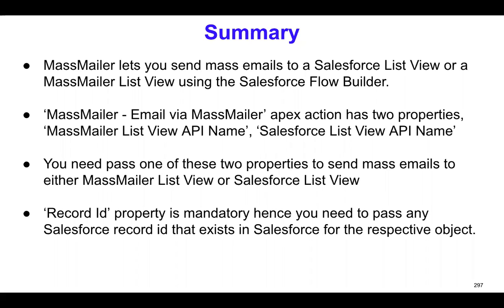It's a very simple Apex action class that you need to invoke. What MassMailer supports is there is a way for you to pass the Salesforce list view or MassMailer list view API name to that Apex action class. The action class name is called MassMailer Email via MassMailer. It has two different properties: one is the MassMailer list view API name and the Salesforce list view API name.